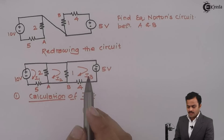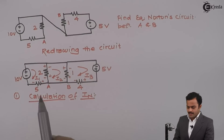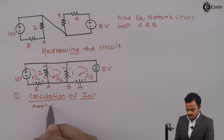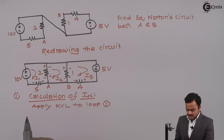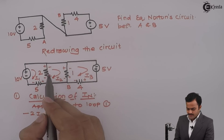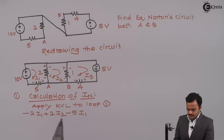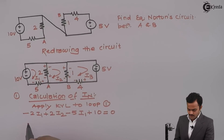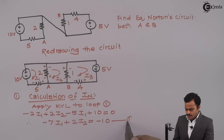As per the direction of currents I will get the voltage drops — all the elements have voltages associated with them. Applying KVL to loop number one, starting from this point: minus 2I1 plus 2I2 minus 5I1 plus 10 equals 0. Simplifying, I get minus 7I1 plus 2I2 equals minus 10 — equation number one.